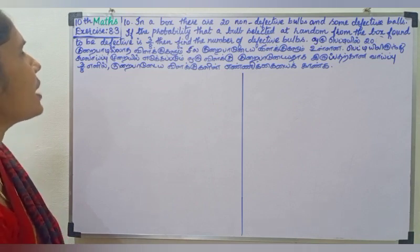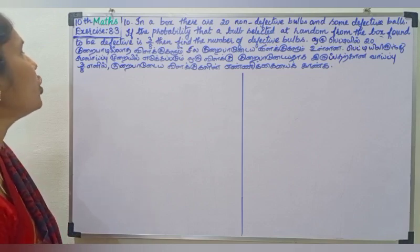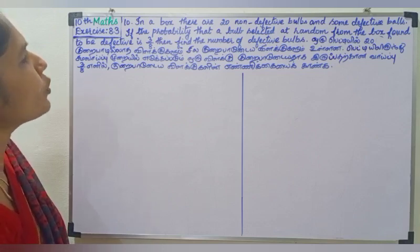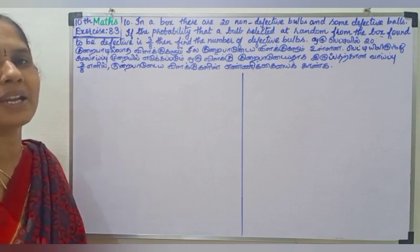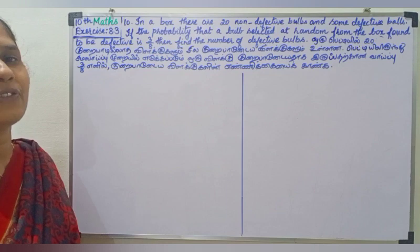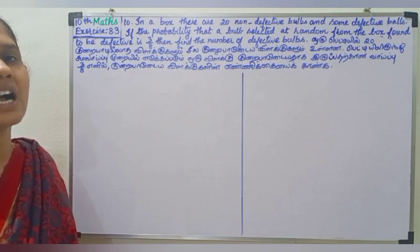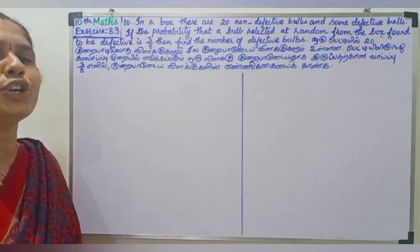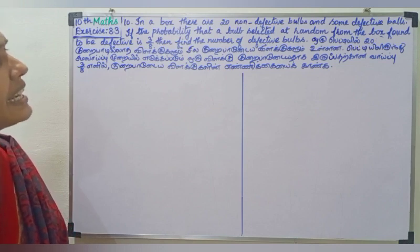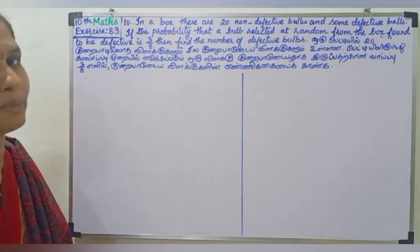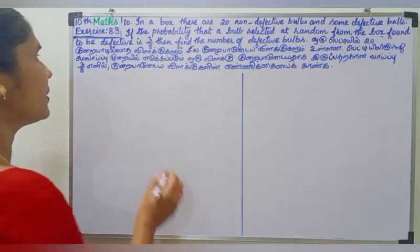In the same way, there are 20 non-defective balls. The probability of getting a defective ball is 3 by 8. We are going to find how many defective balls there are. We will do this.